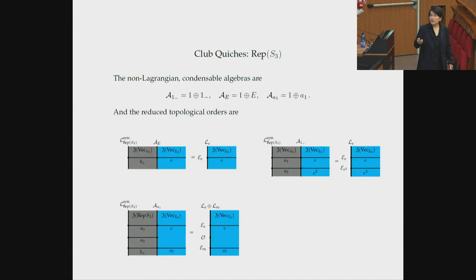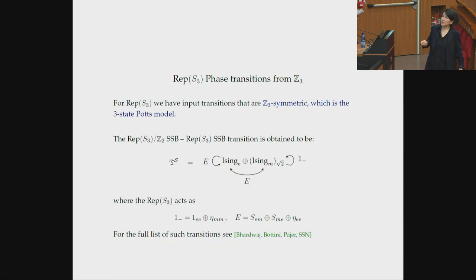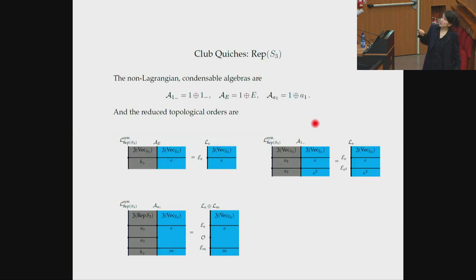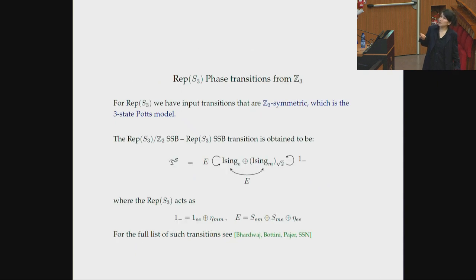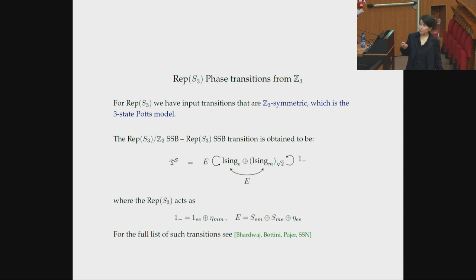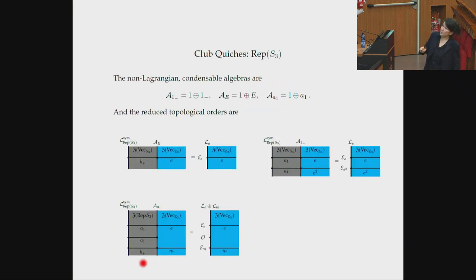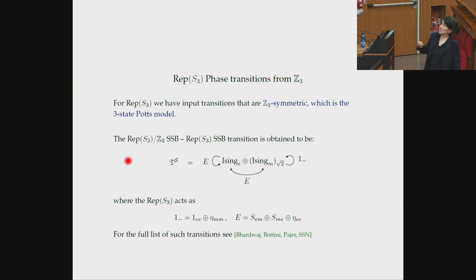An example of a Z4-symmetric gapless phase is Ising plus Ising with Z4 acting as an exchange between the two, and the Z2 subgroup acting inside each Ising as the standard Ising symmetry — this is the transition between the Z4 and Z2 SSB phases. There's also the transition between the Z4 trivial and Z2 SSB phases. For non-invertible symmetries we can do the same, since the whole formalism is blind to whether you started with an invertible or non-invertible symmetry. For Rep(S3) you get reduced topological orders that are Z3, giving a three-state Potts model as the initial transition.